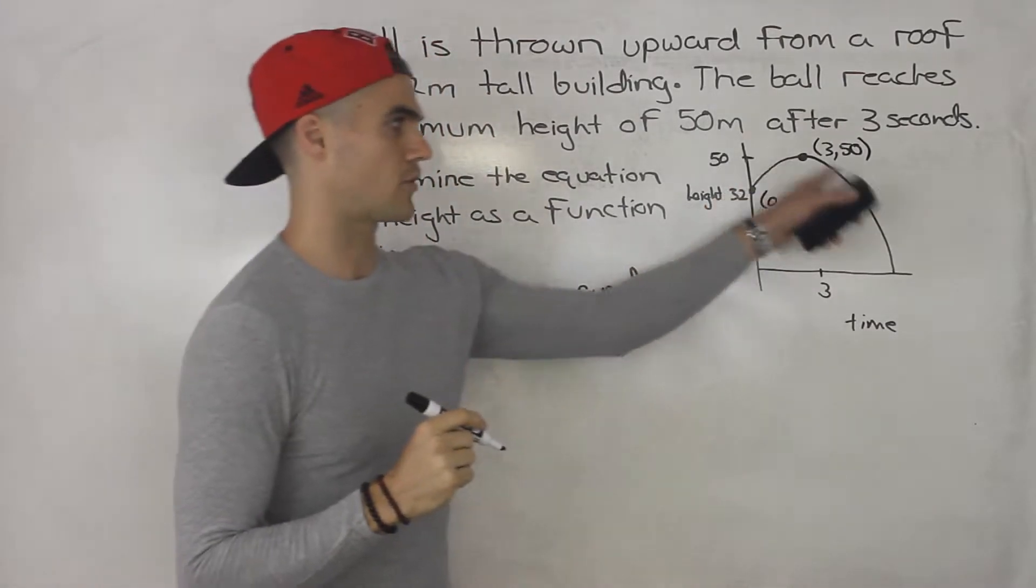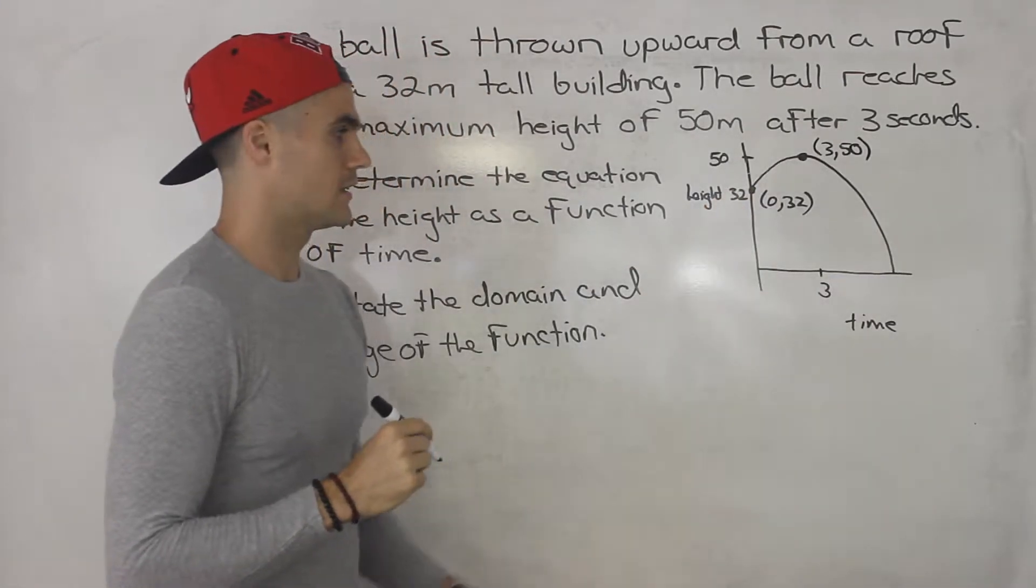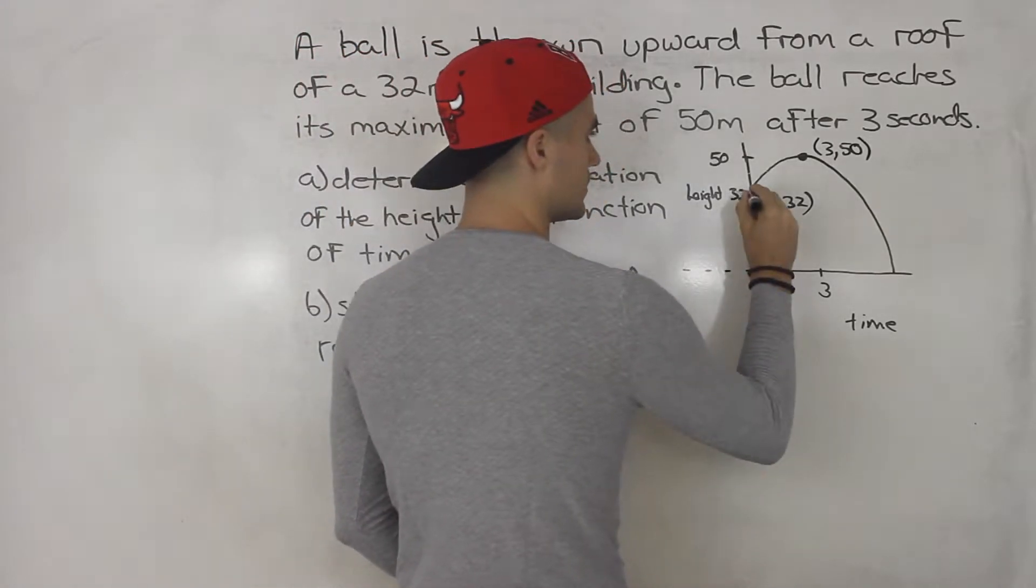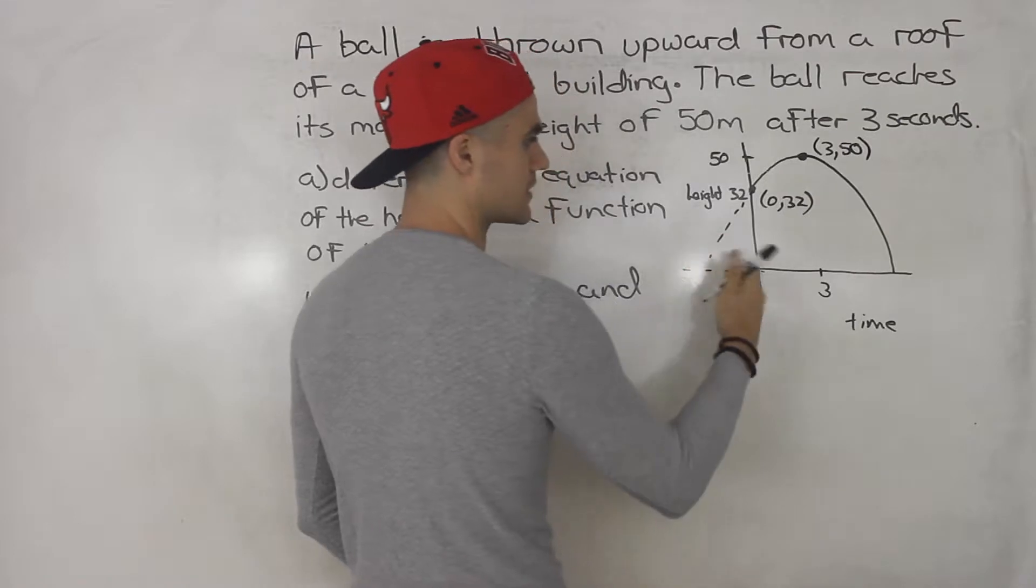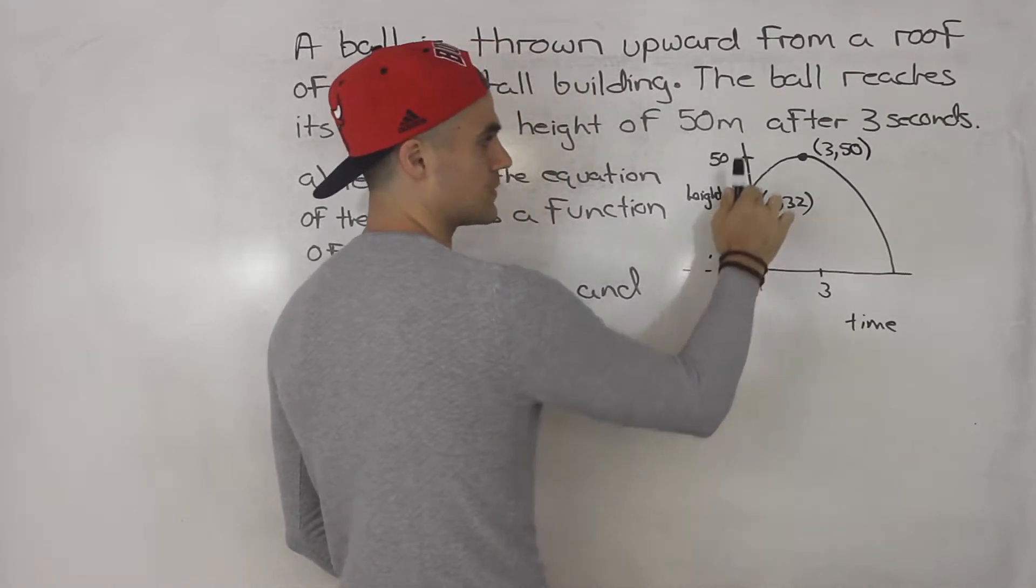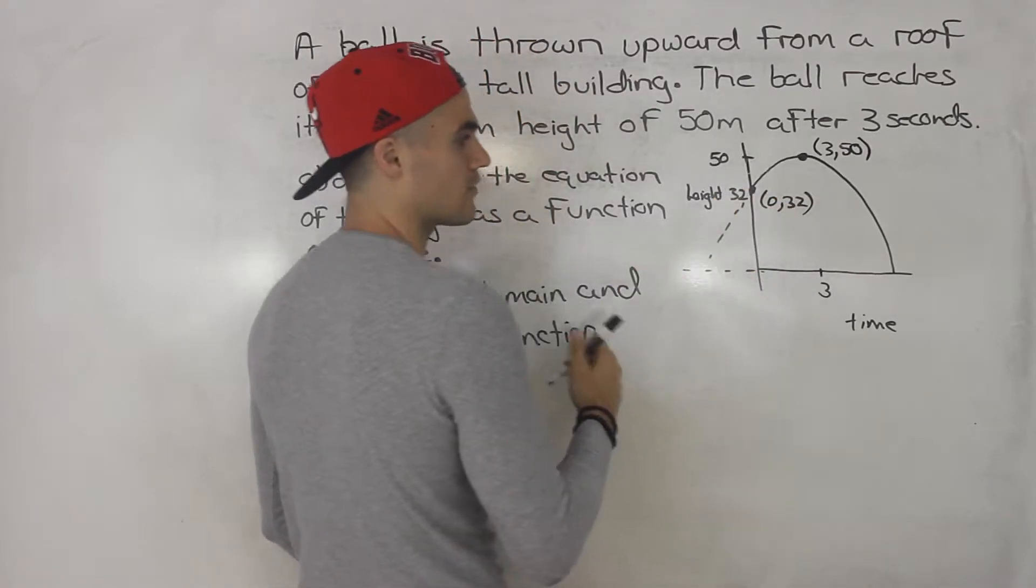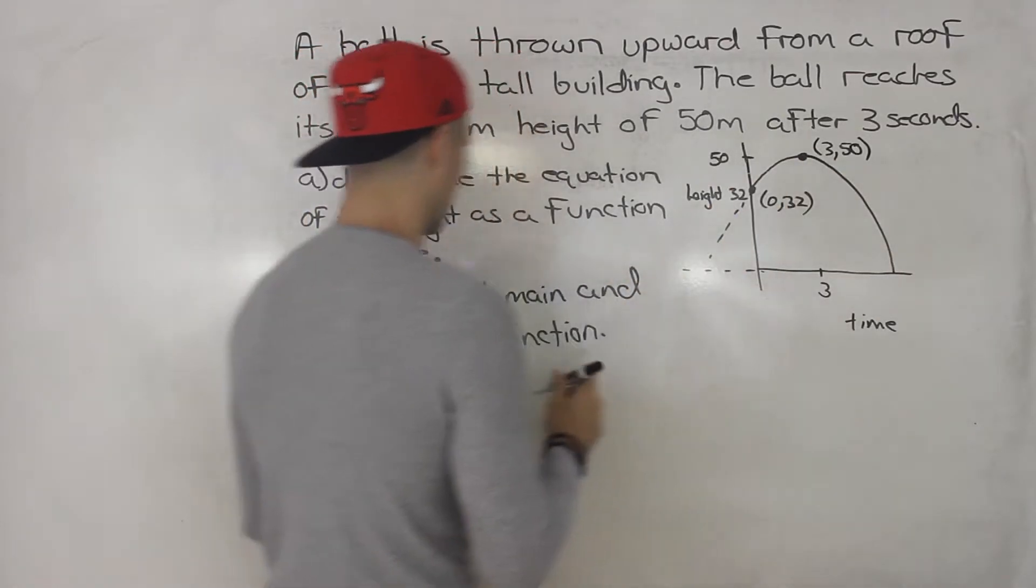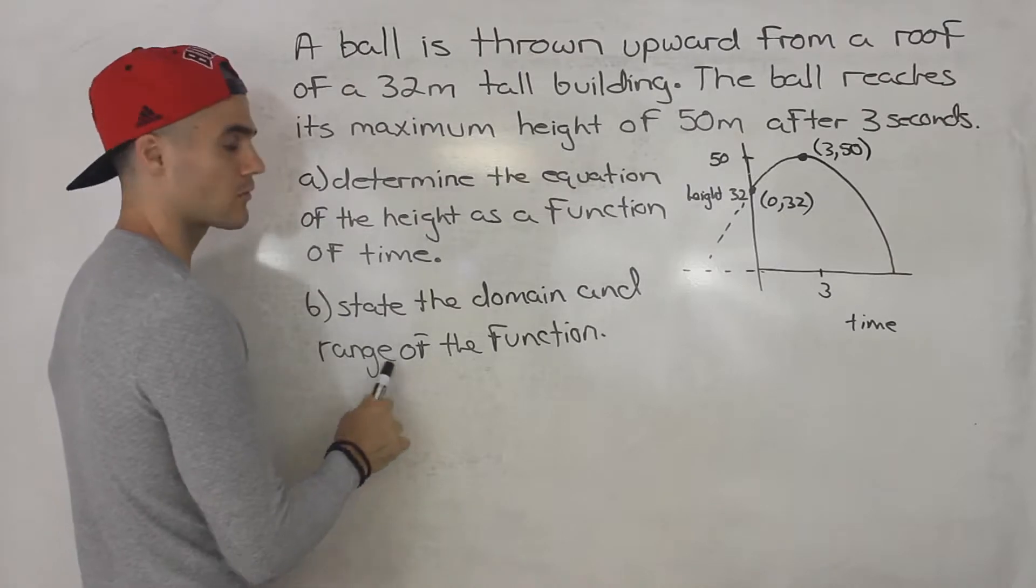This coordinate is 3 and 50, that's the maximum. And this coordinate here is 0 and 32. And we're dealing with a parabola here. Now notice that we don't keep drawing the parabola because time can't be negative.